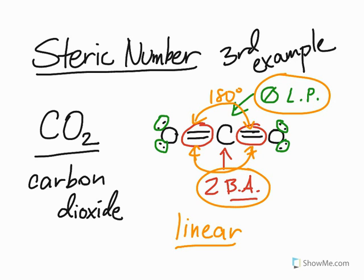So again, here's our third example, carbon dioxide. There's two bonding areas, zero lone pairs around the central atom. So that shape happens to be linear. We'll take a look at the individual shapes now in future videos. And we'll see you soon.